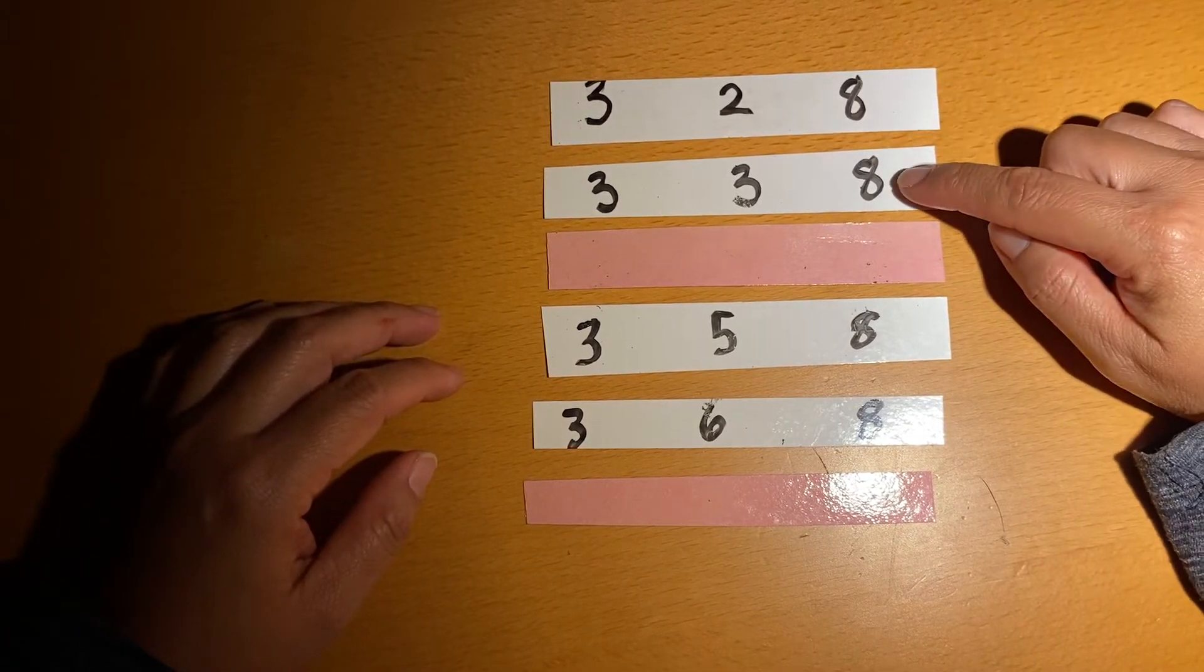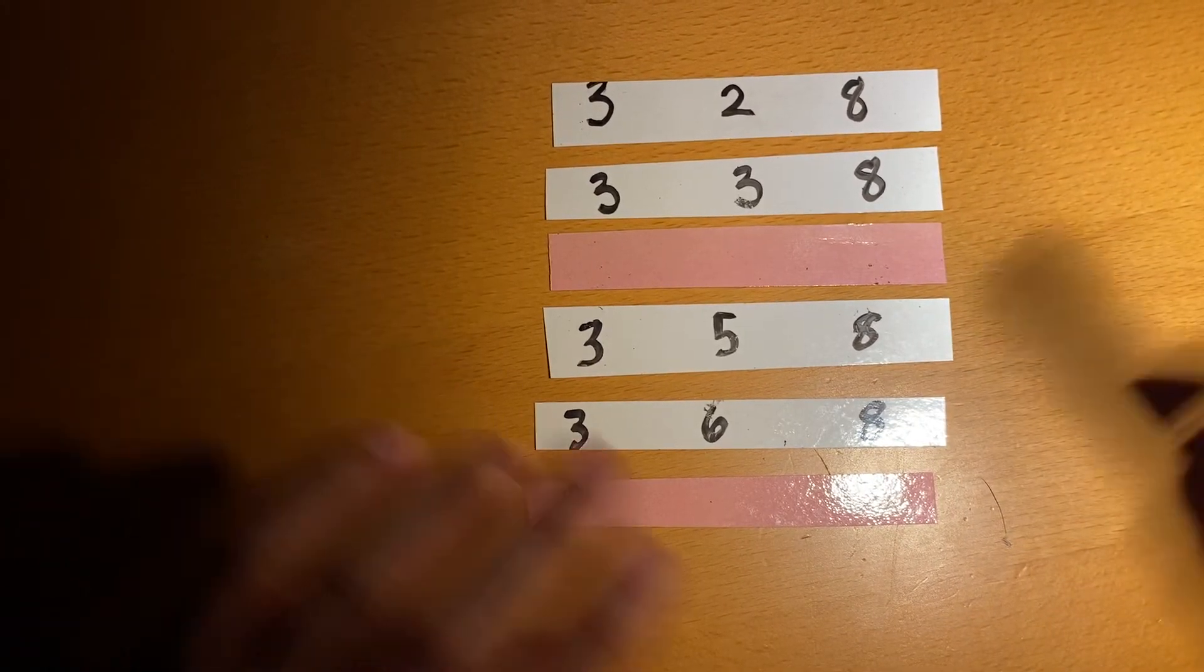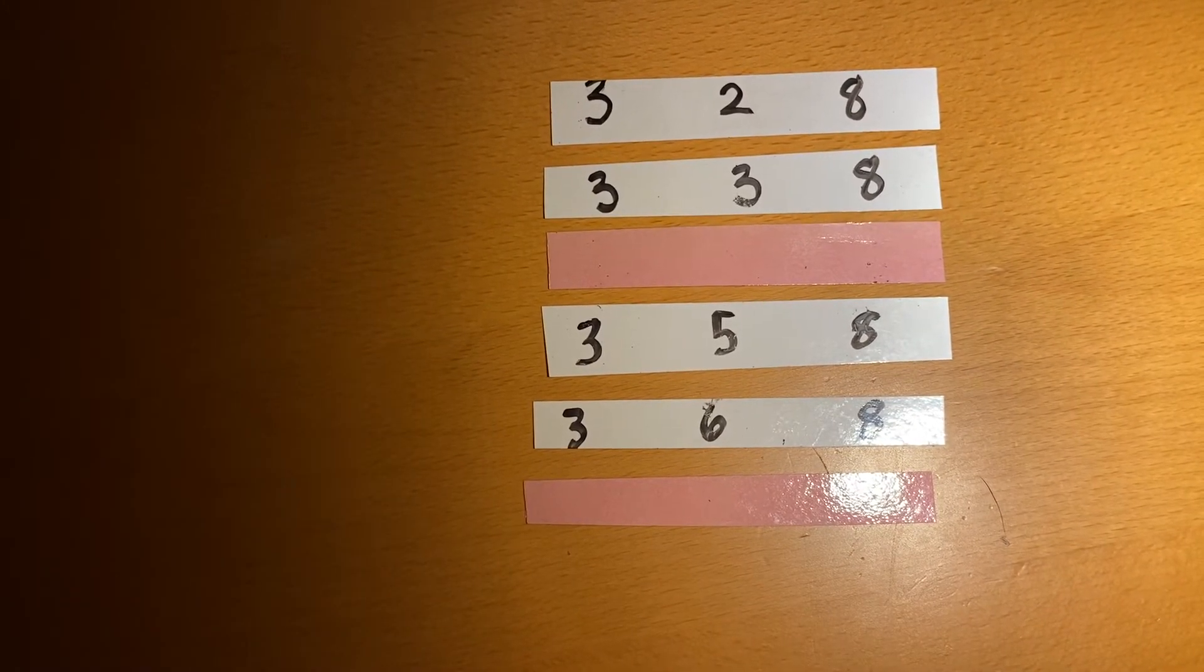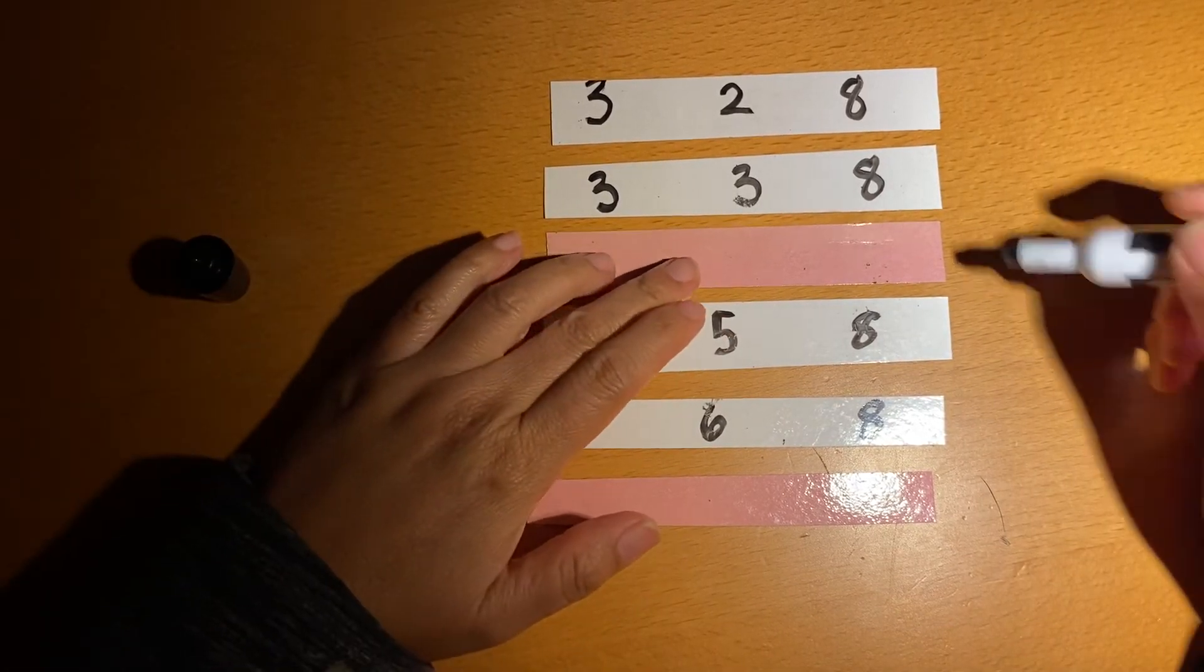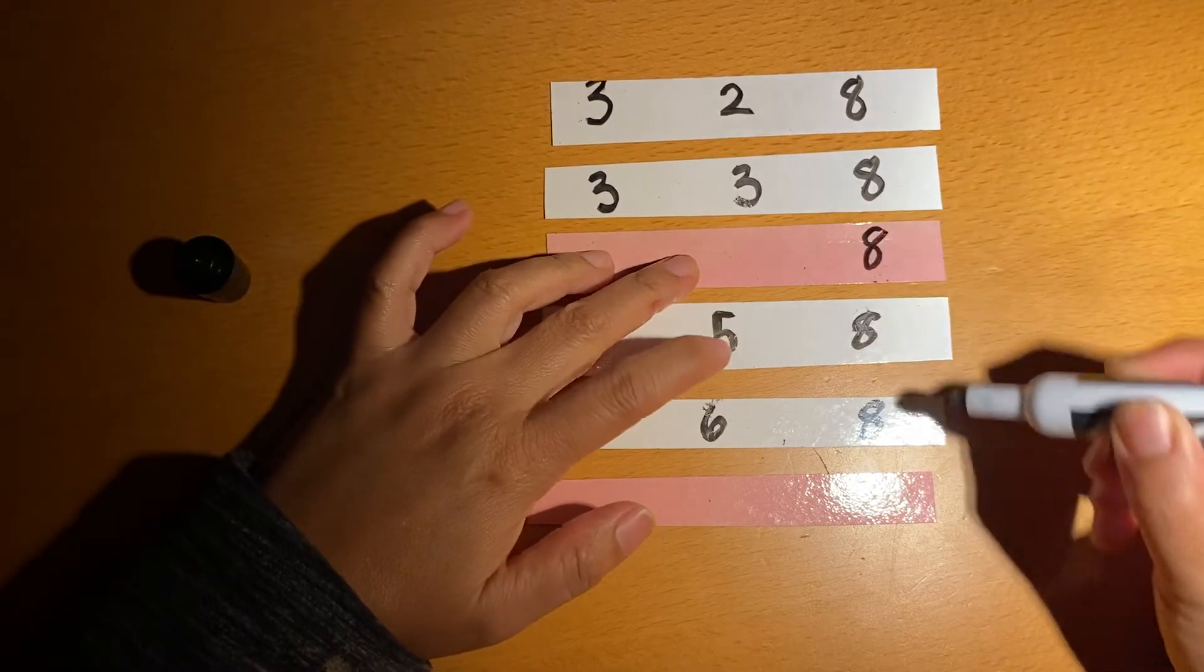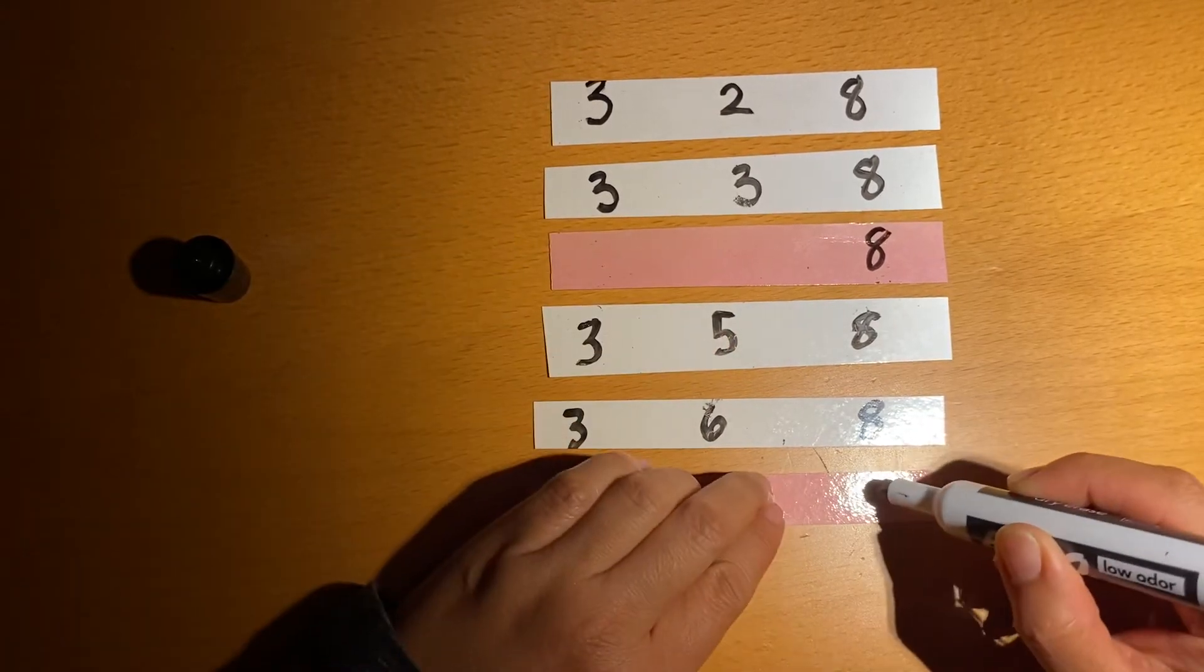We have 8, 8, 8, 8, so we can think that it's probably going to be 8 here and 8 here.